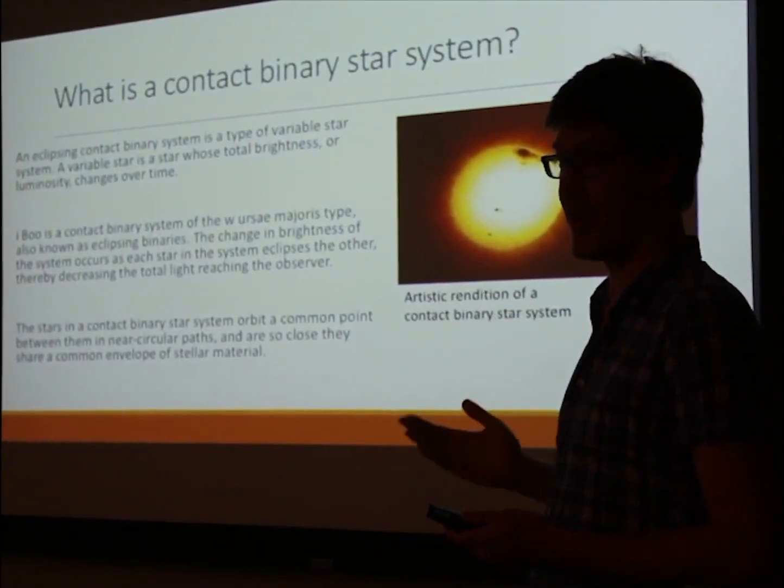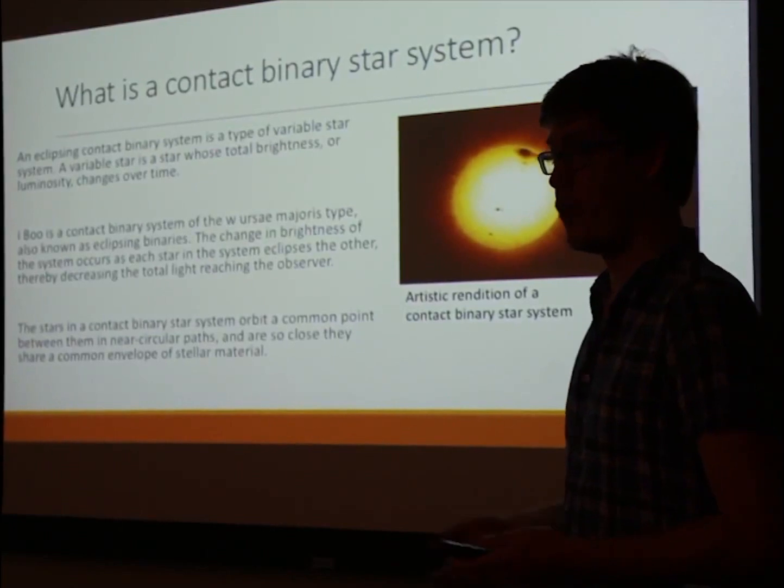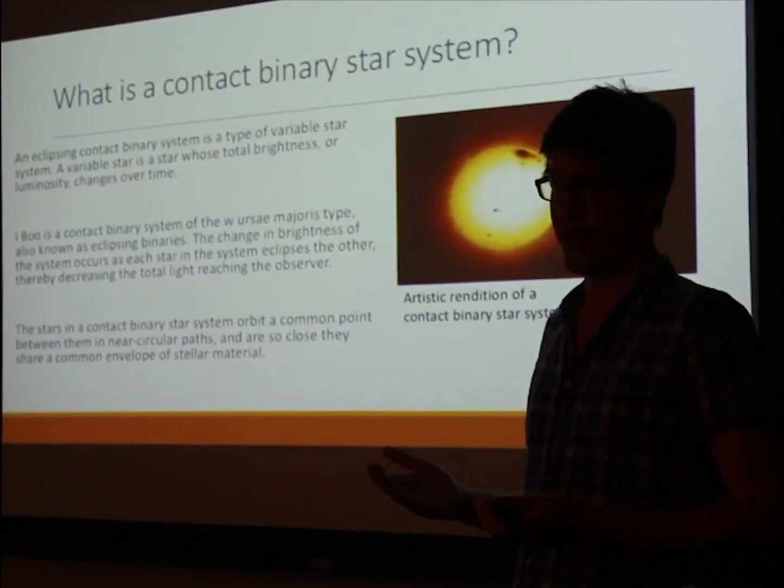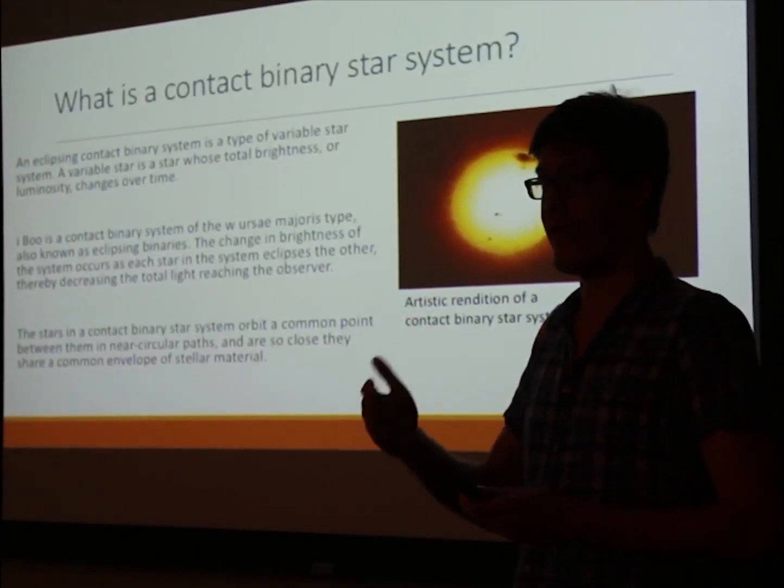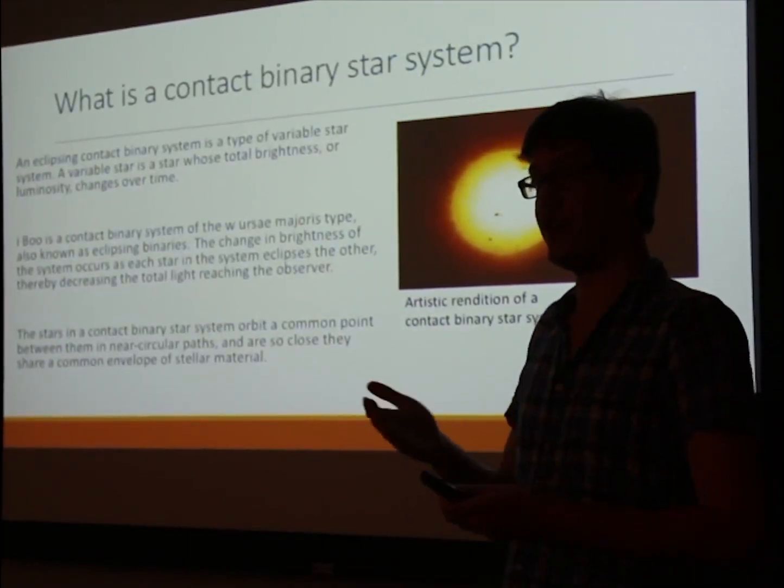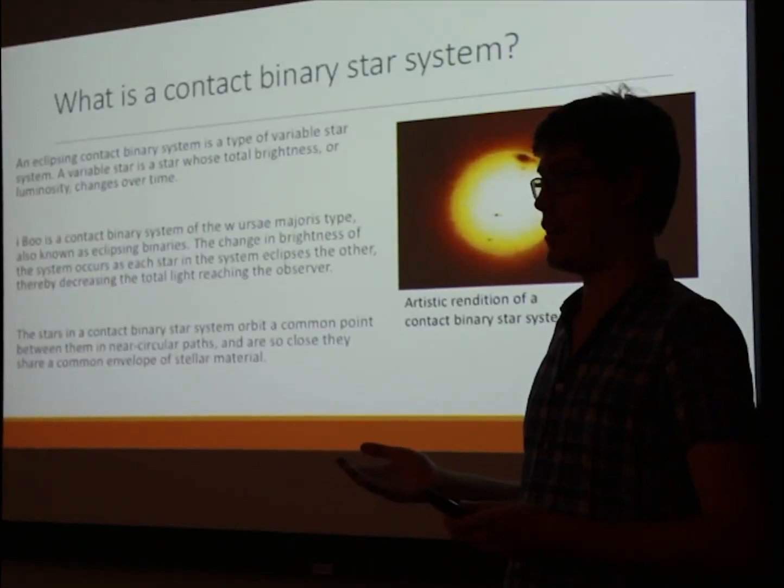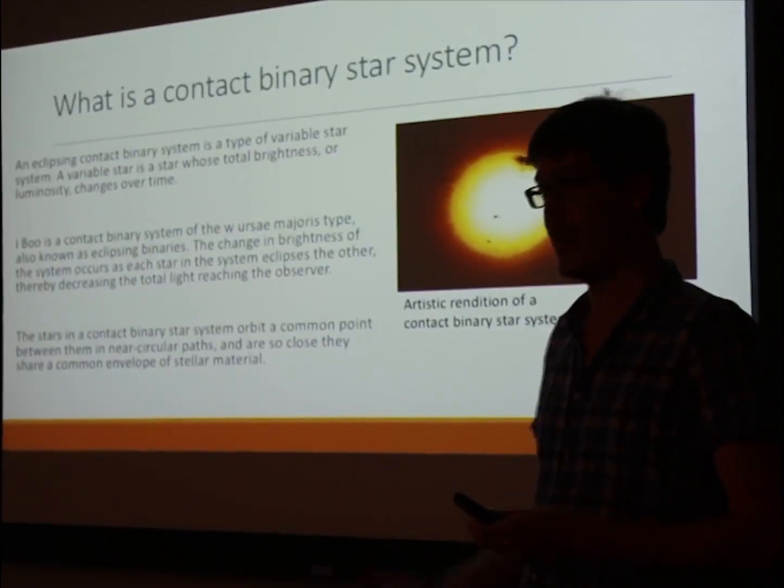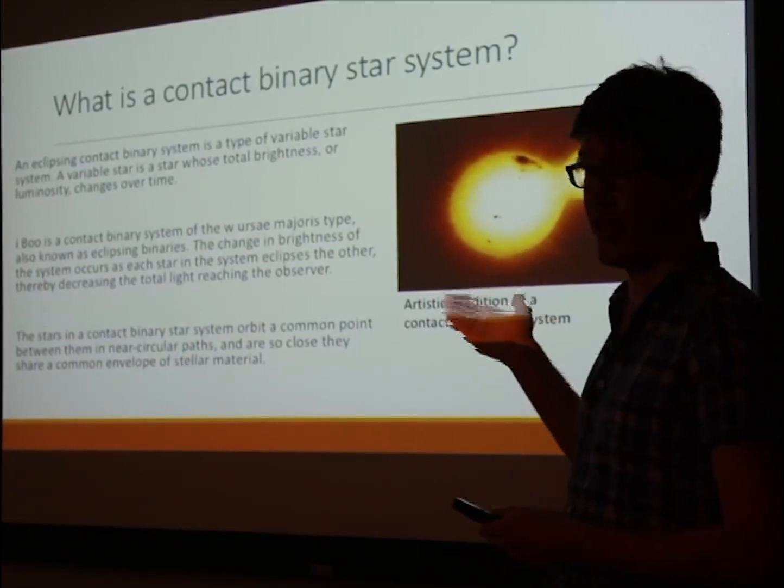What is a contact binary star system exactly? Well, it's a kind of variable star system, as Professor Seeperson mentioned. In a variable star system, the total brightness of that star or star system will change over time, and there are plenty of reasons that can cause this change in brightness.